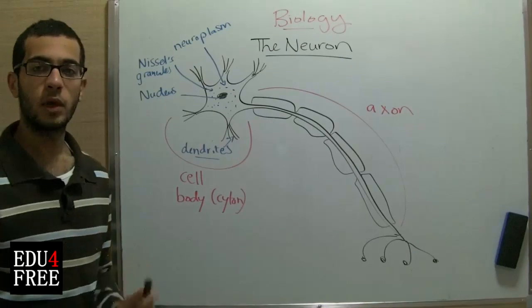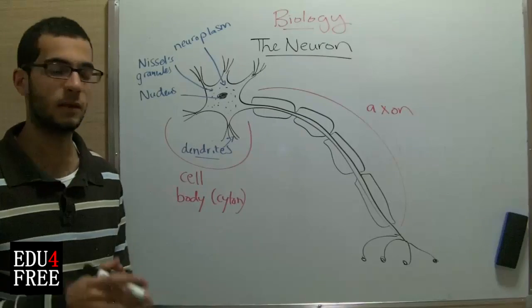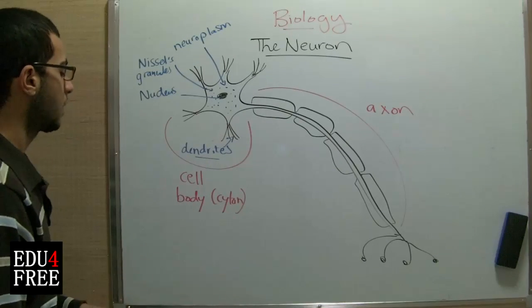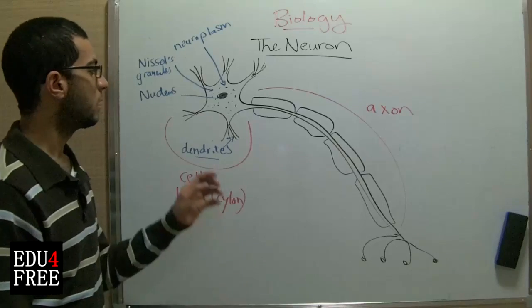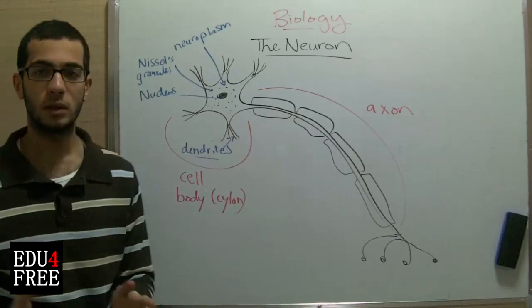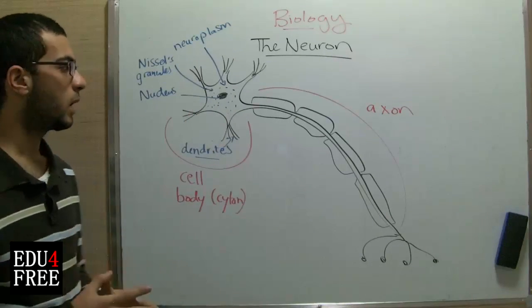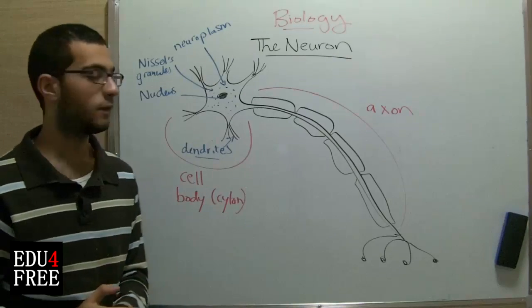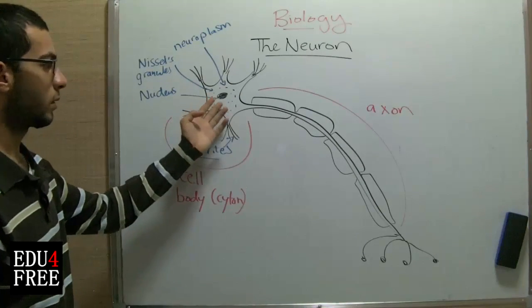The centrioles are used in the process of cell division, and by the absence of centrioles in the neuron, it means that it doesn't have the capability of cell division. Why doesn't the neuron have the capability of cell division? The point is simple: from the moment you are born till the moment you are dead, the organs inside your body don't increase or decrease. Each organ needs a certain number of nerve cells that connect it to the central nervous system, so there is no need to add more nerve cells. That's why the centrioles are absent.